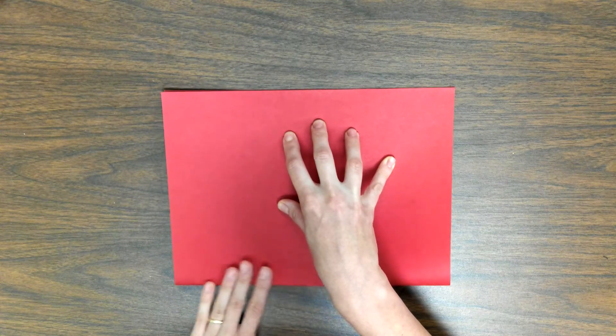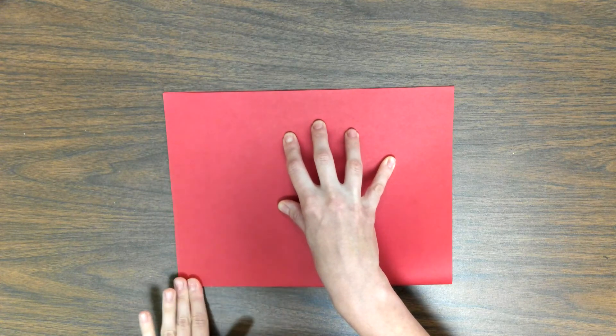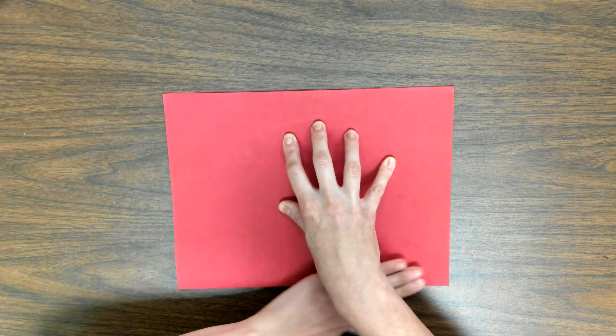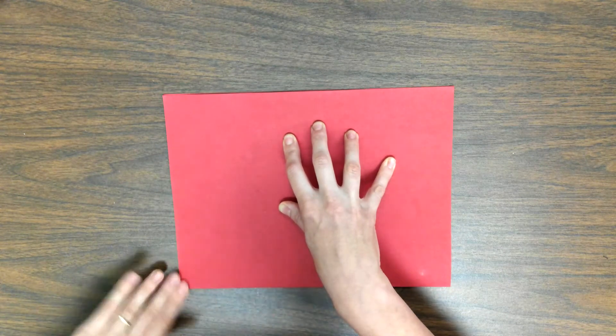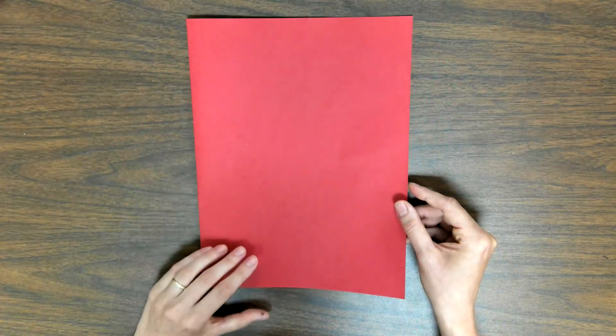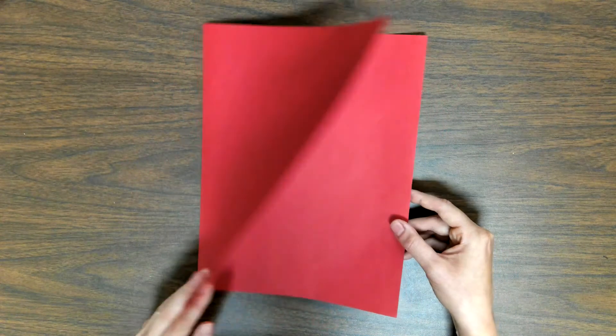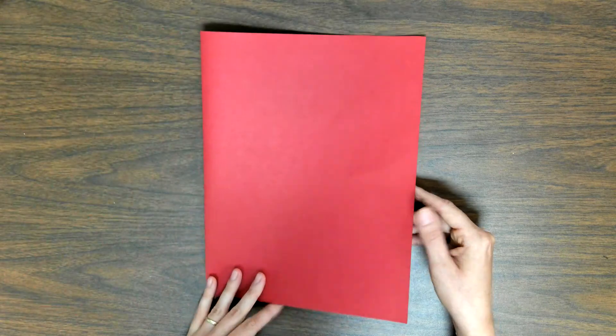And then while you are holding onto your paper, so this hand is holding onto the paper, I'm going to take my other hand and press down and fold. So fold this side, and then if you can go right under your hand to fold the other side.